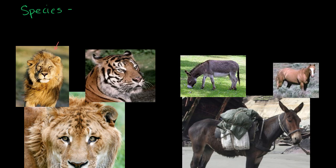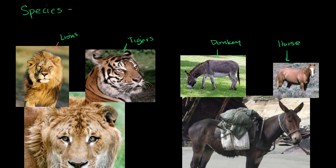For example, this is one particular animal, but we see other animals that seem to look like it, and so we say they're all part of the species of lions. And this animal — there are other animals that have stripes, but some might be fatter or taller or skinnier, darker or lighter — we say they're similar enough, and we call them all tigers. We would call the things that look similar to this animal a donkey, and we would call the things that look like this animal a horse.